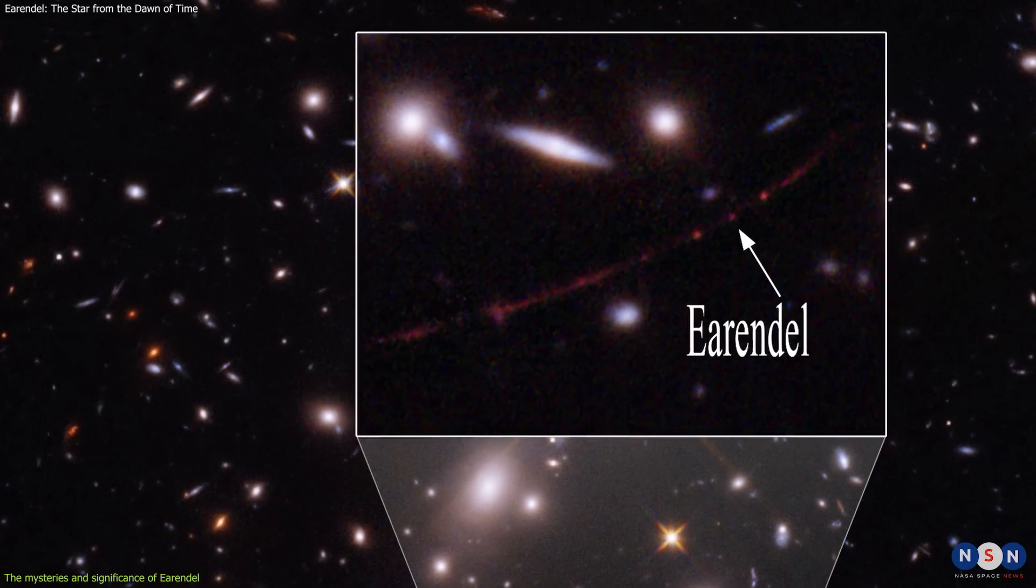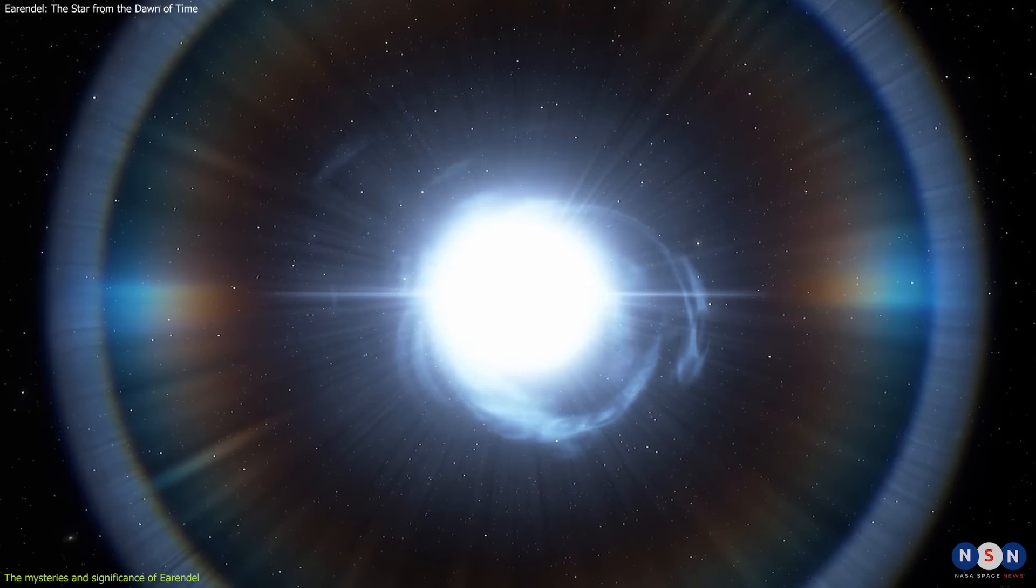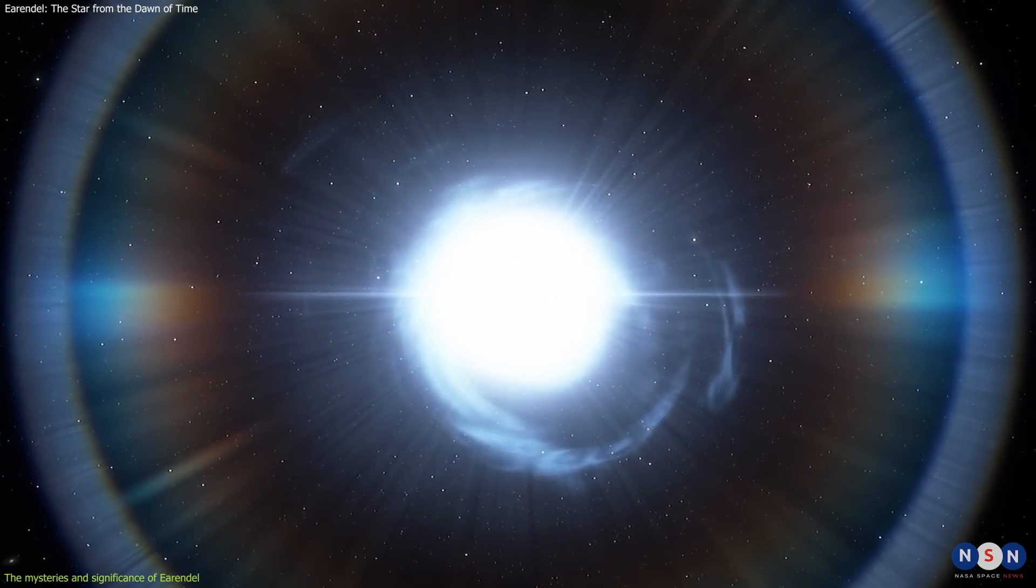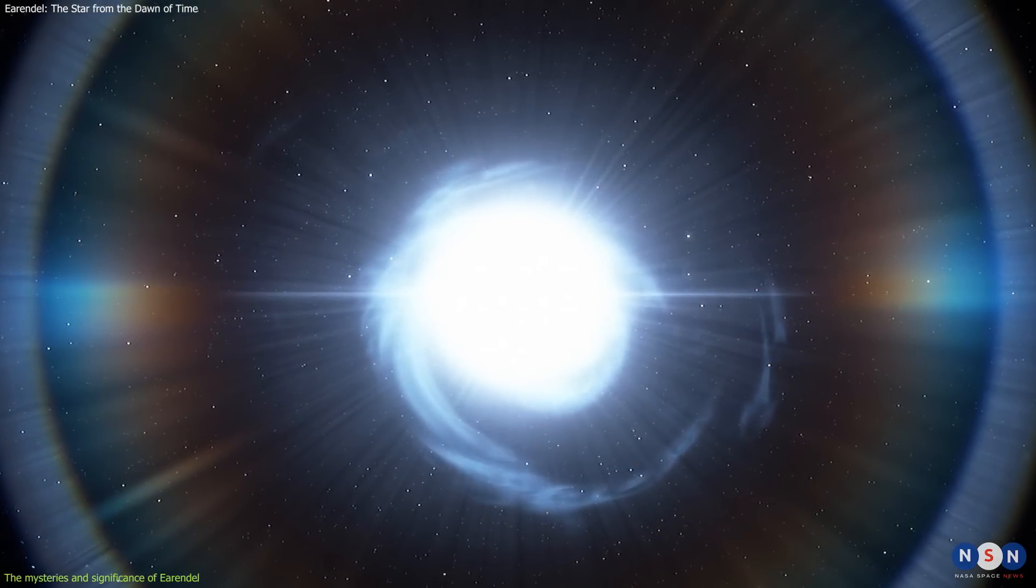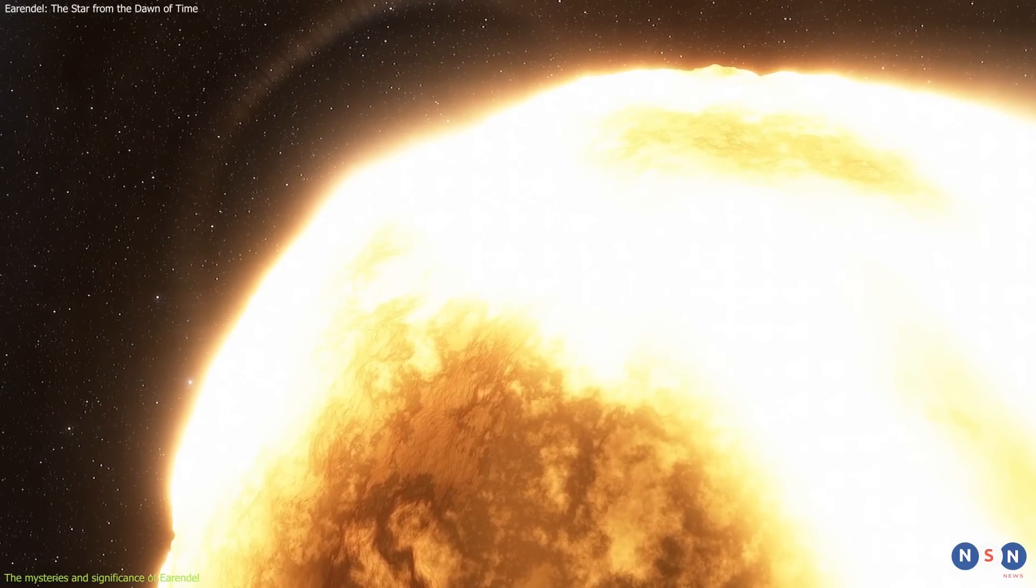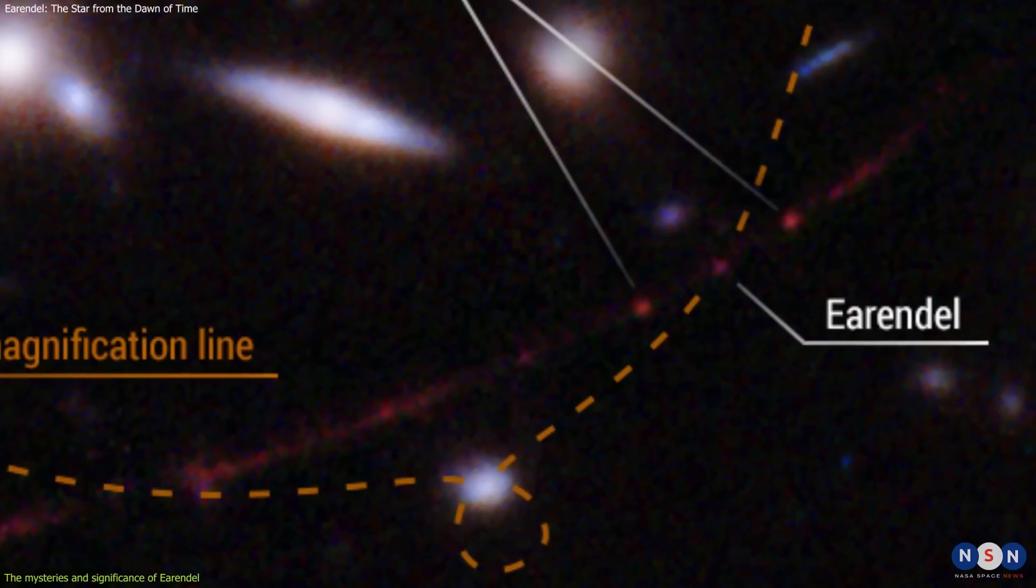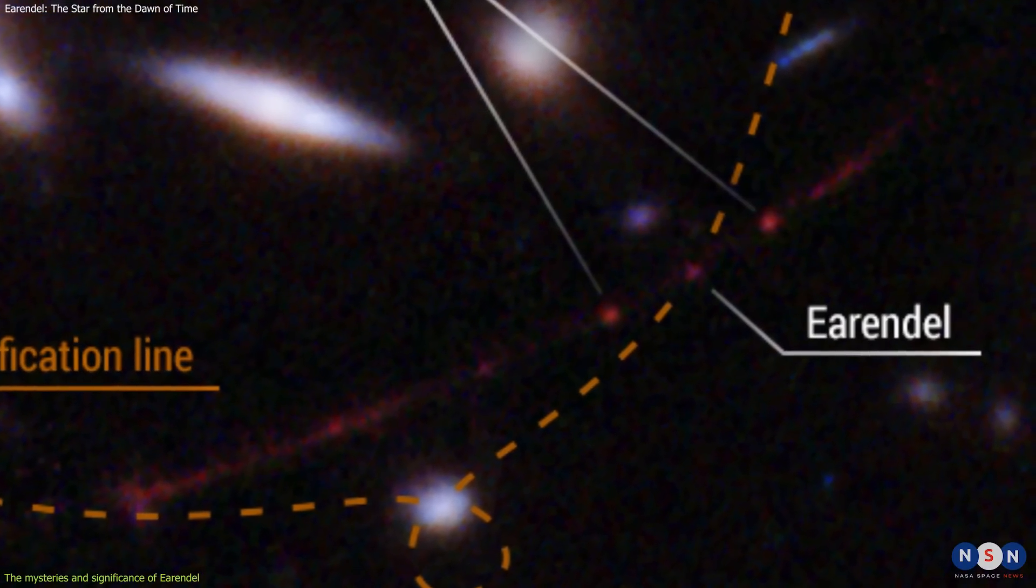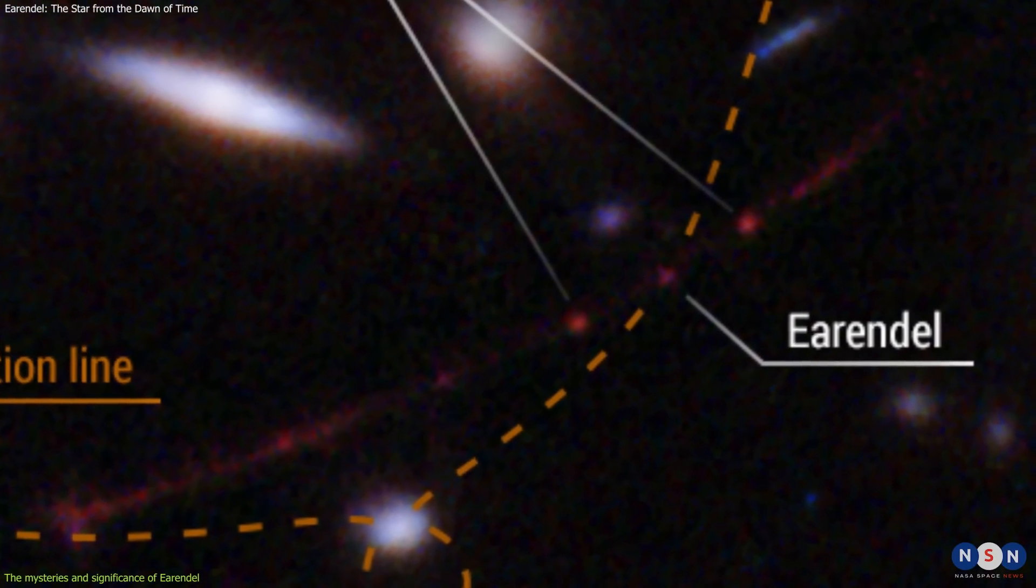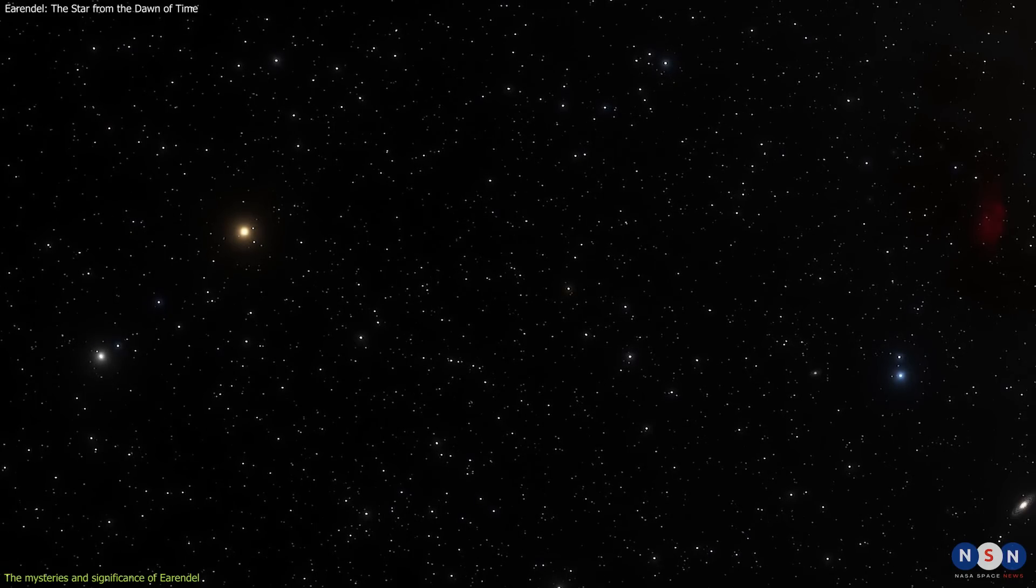However, it is not as metal-poor as Earendel, which has only 1/250th as much of the heavy element content of our Sun, while the Methuselah Star has about 1/50th. This suggests that Earendel is even more primitive and ancient than the Methuselah Star, and may belong to a different generation of stars.